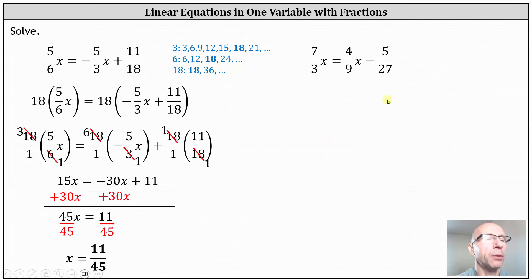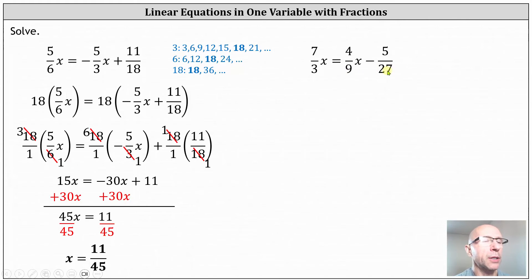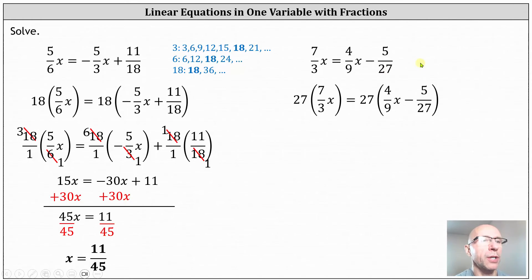Now for our second example. Notice we have denominators of 3, 9, and 27. 27 is the least common denominator, and therefore we will clear the fractions from the equation by multiplying both sides by 27. Again, let's write 27 as a fraction with a denominator of one, and let's also distribute 27 on the right side of the equation.